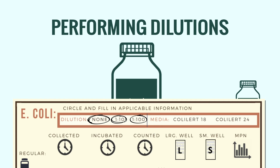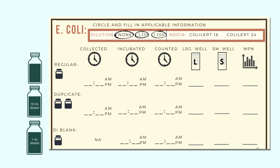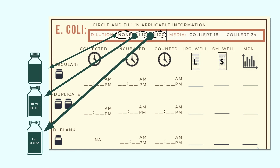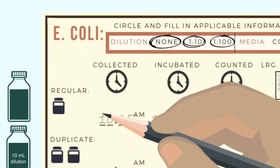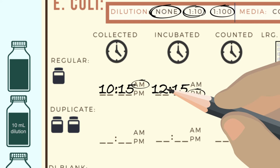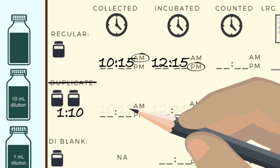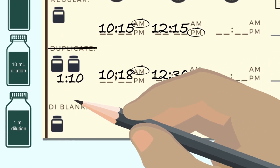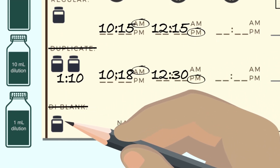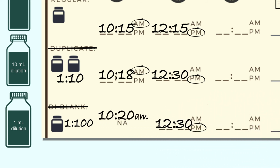On your data form, circle the dilutions used. Here, we'll circle all three since we have a full sample for each one. The first regular sample will be recorded under Regular. For the 1 to 10 dilution, cross out the title of the second row and write 1 to 10 to record that data there. You can also cross out the title of the third row and write 1 to 100 to record that data in that row.